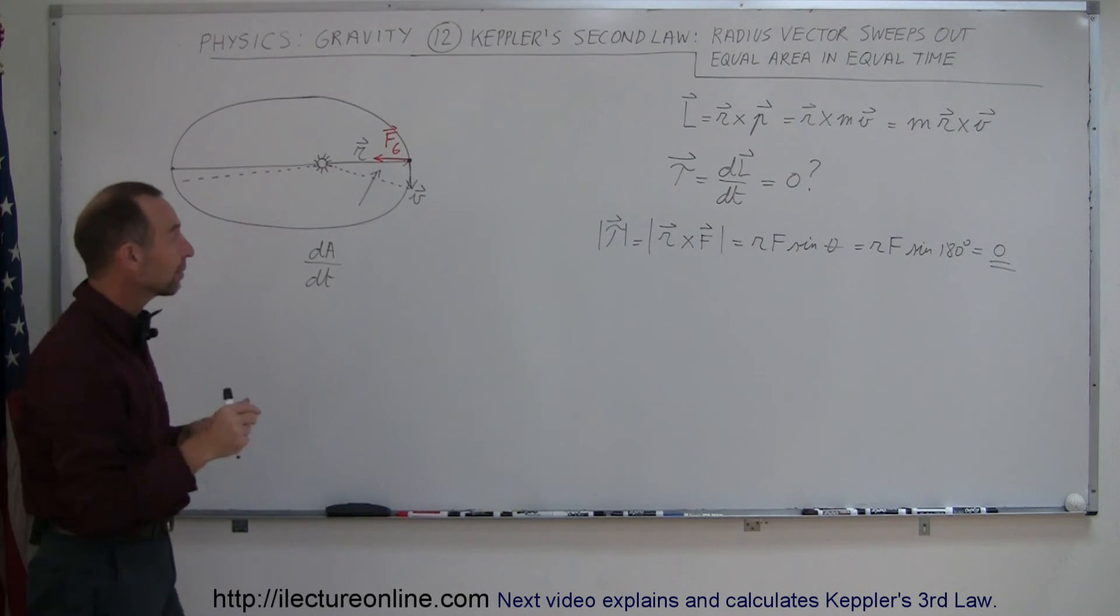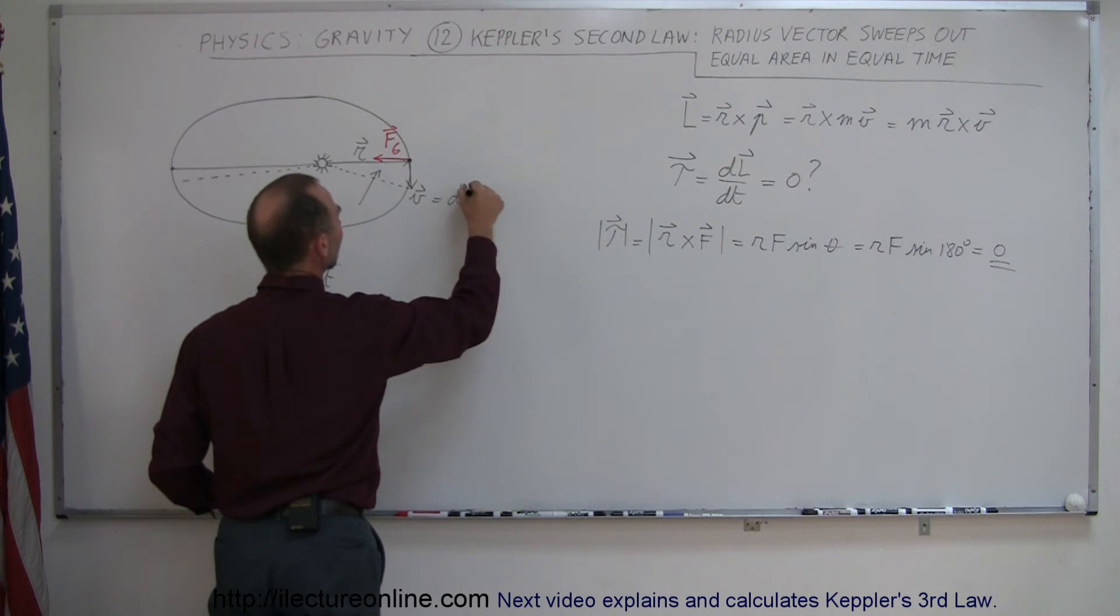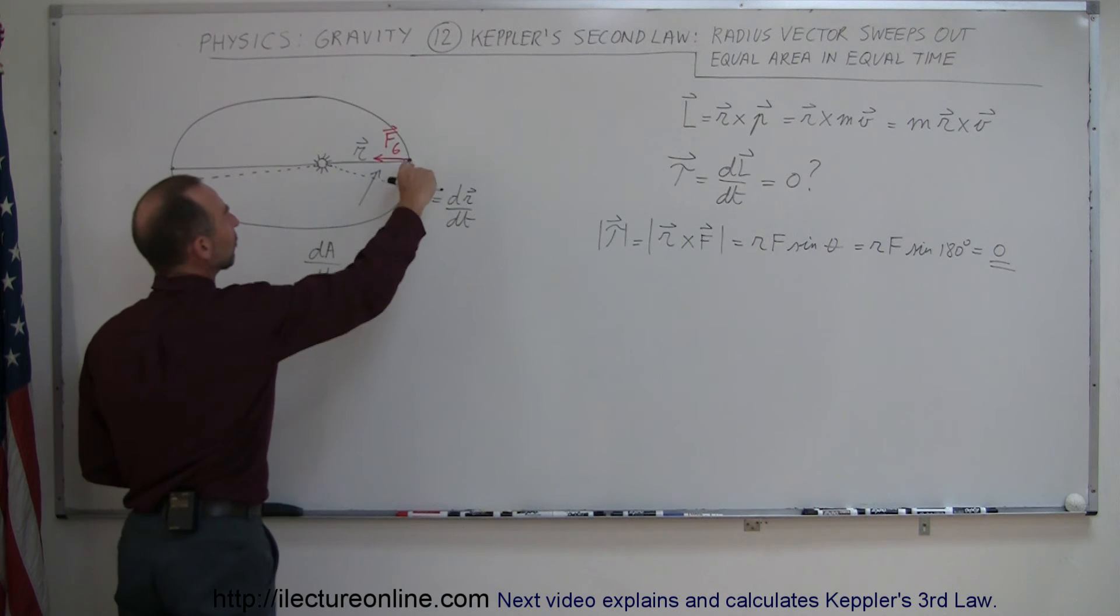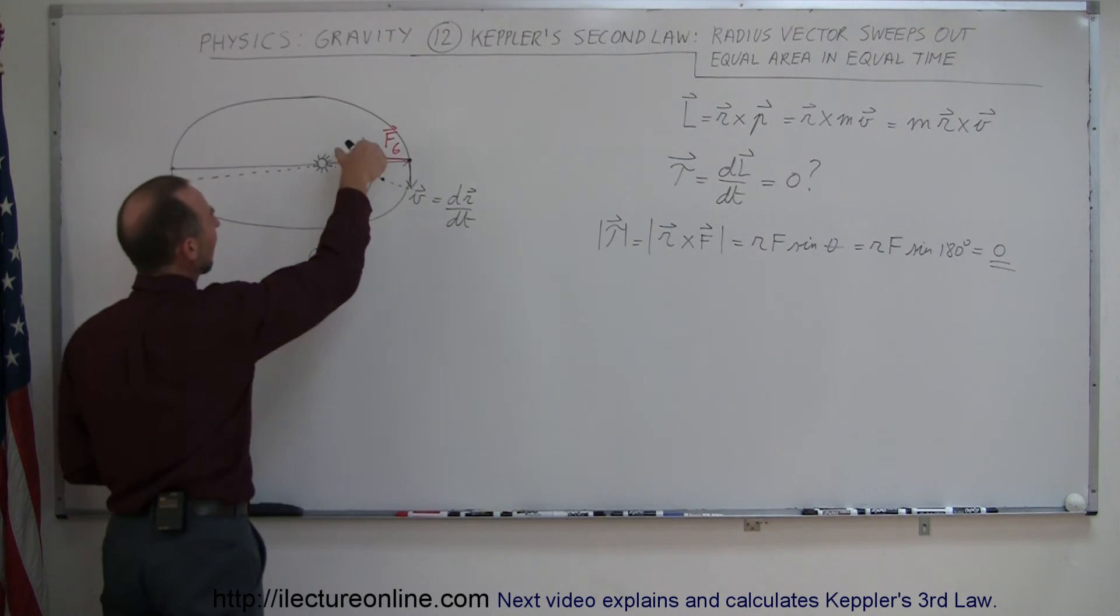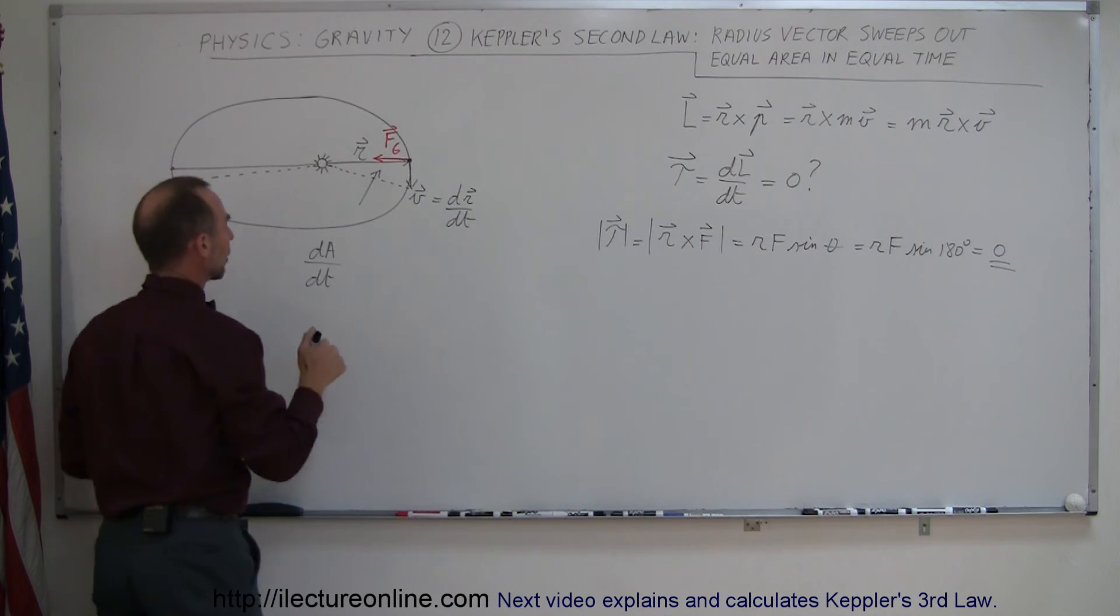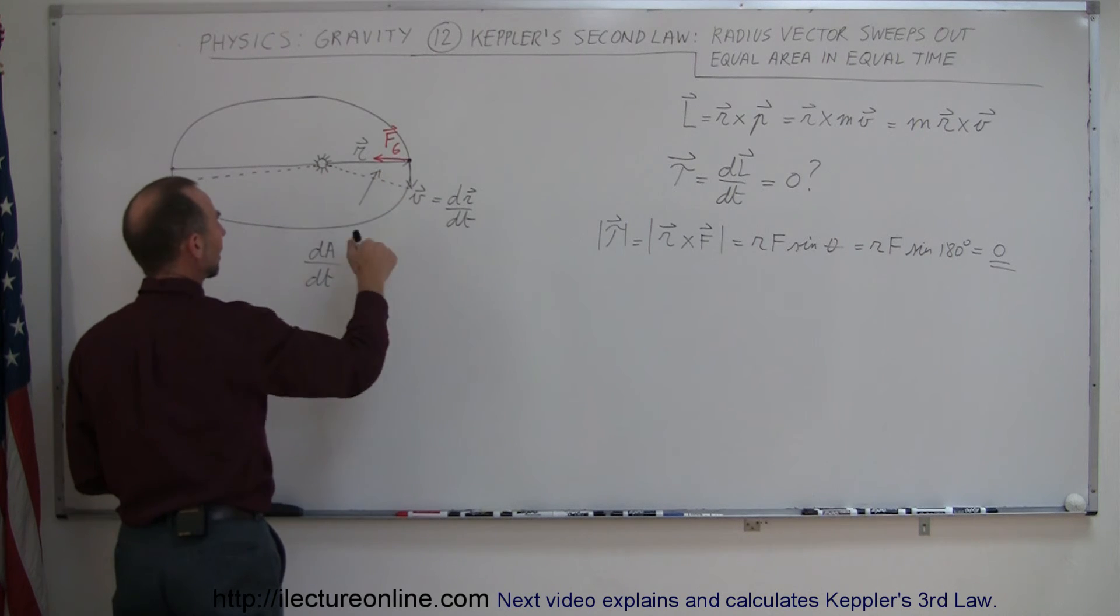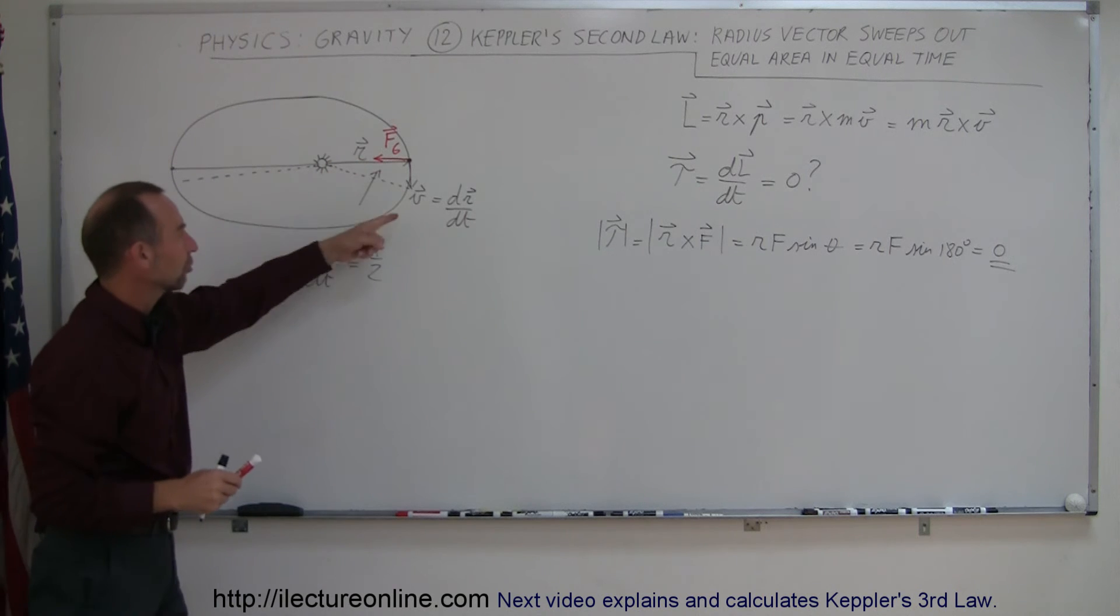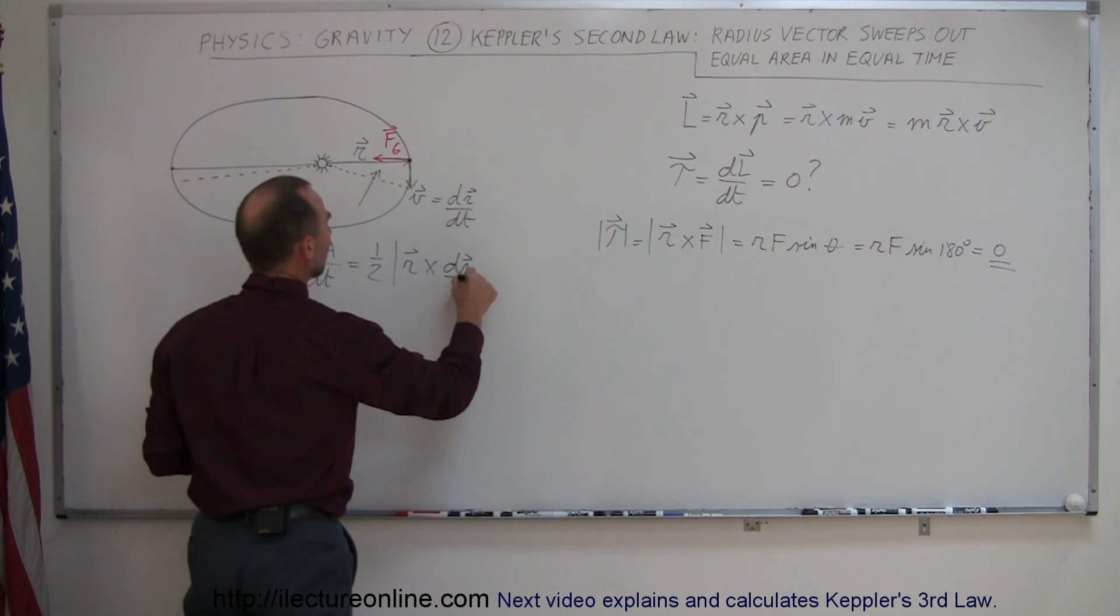So if we now write the velocity as velocity is the change in the position vector with respect to time, then we can say that this right here, this length of this vector is dr dt, and this length here is r. So we can go ahead and say that this is equal to the area being swept out is equal to one half, the length times the width, or the length times the base, because this is kind of like a triangle. So this is equal to the absolute value of r cross dr dt.